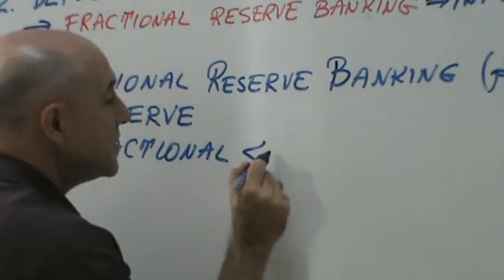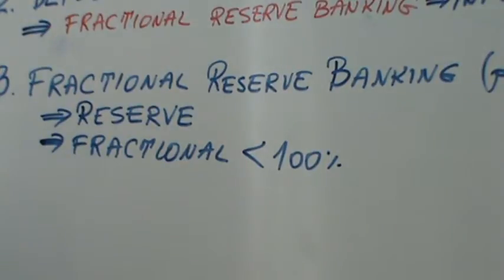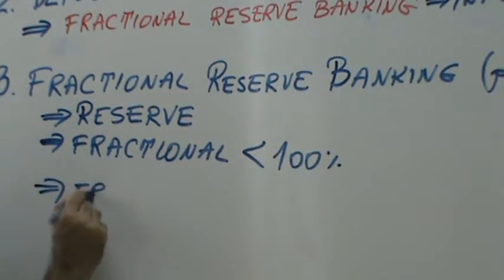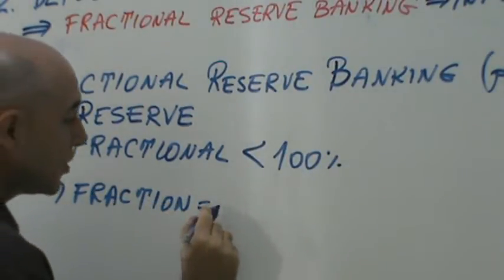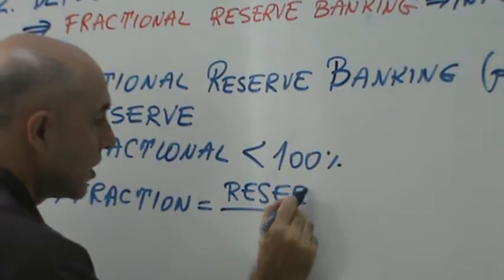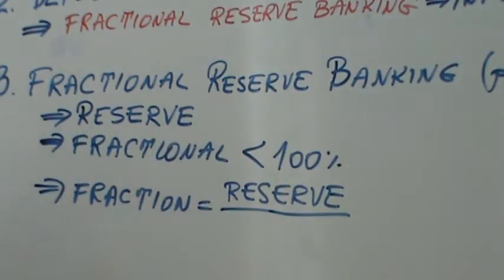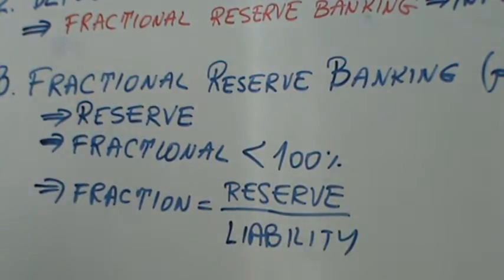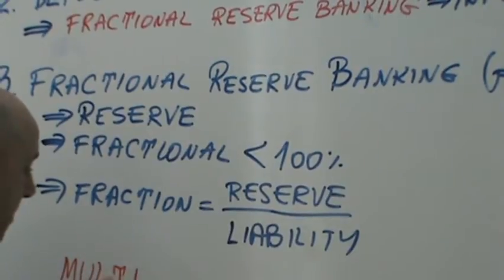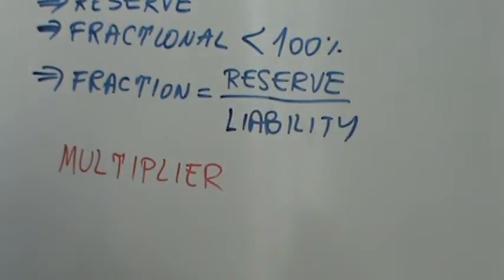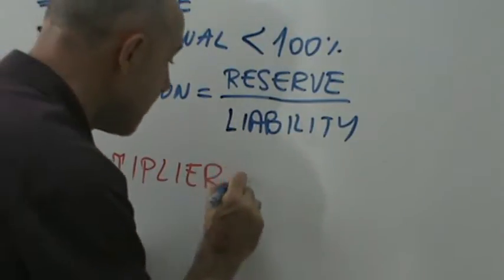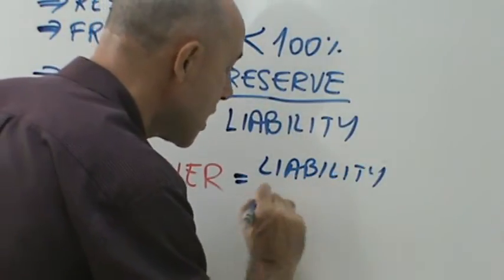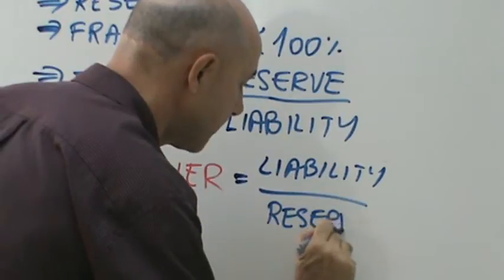Fractional means less than 100%. The fraction is simply the ratio of the reserve to the liability — asset to liability. Coming in the next chapter is the multiplier. The inflationary effect is the liability over the reserve.